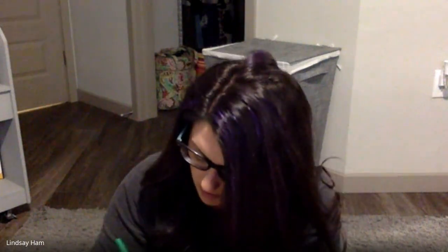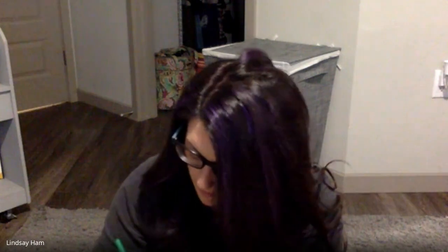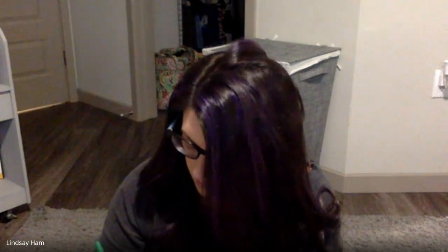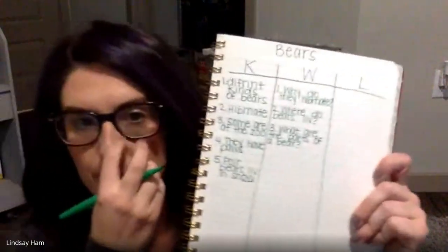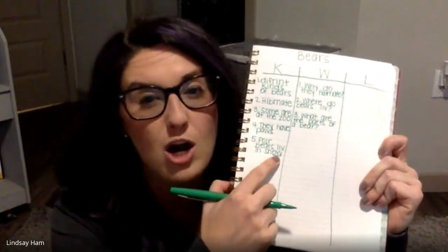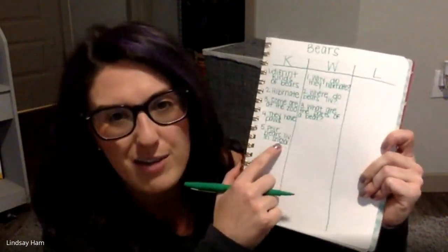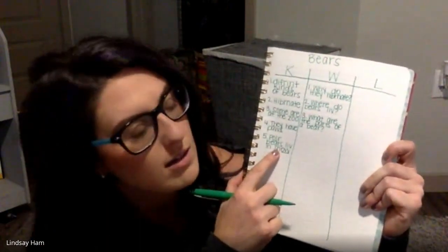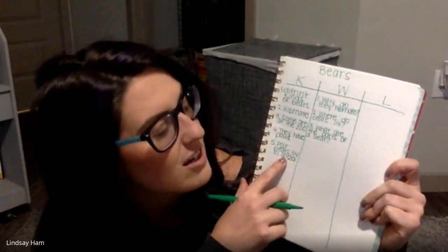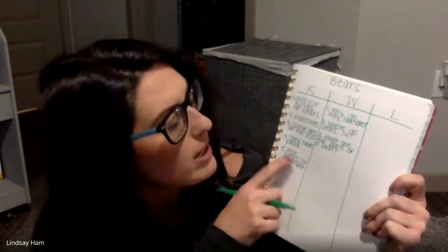I know that polar bears live in the snow, but that's the only kind of bear I know where they live. So number five on the K side: 'polar bears live in snow.' I underlined the OW right there because we know that OW can say 'ow' or 'oh.' If we came to it in a book we could try 'ow' — 'sn-ow, now' — or we could try our flippy sound and do 'oh' — 'snow.' Oh, that makes more sense! So polar bears live in the snow.